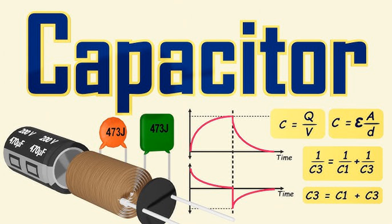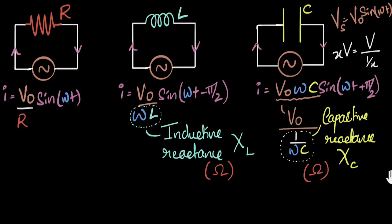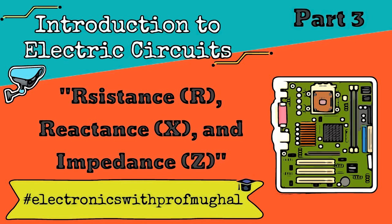Impedance, Z, is a comprehensive measure of the total opposition to the flow of alternating current, AC, in a circuit. It encompasses both resistance and reactance, considering their magnitudes and phases. Impedance is represented as a complex quantity because it has both real (resistive) and imaginary (reactive) components. The impedance of a circuit is denoted by the symbol Z and is measured in ohms. Mathematically, impedance is represented as a complex number where the real part corresponds to resistance, R, and the imaginary part corresponds to reactance, X. The impedance Z of a circuit can be expressed as Z = R + jX, where R is the resistance in ohms, j is the imaginary unit equal to √−1, and X is the reactance of the circuit in ohms.